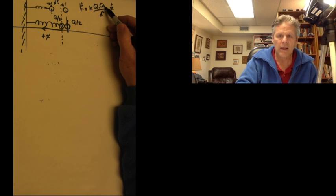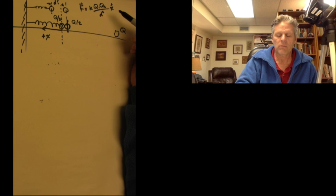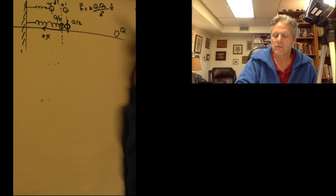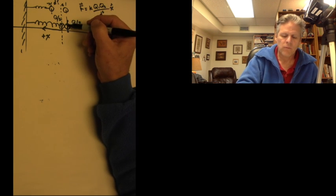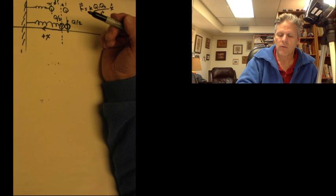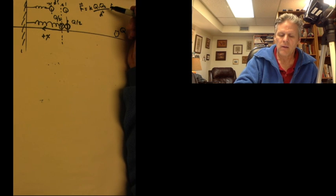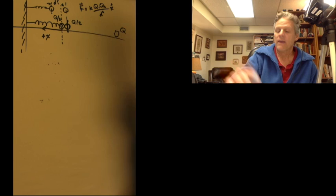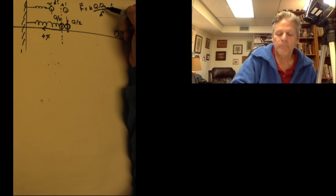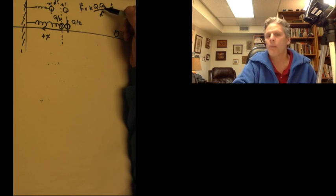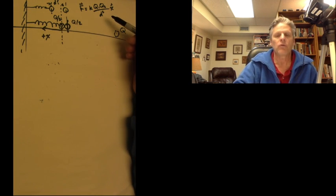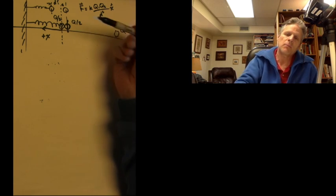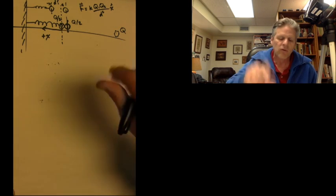Therefore, if Q1 and Q2 are negative, wait, did I do that correctly? Let me think about this. I'm going from here to here. I'm exerting the force on that one. Everything's great. If Q1 is the opposite sign of Q2, the force would be in the minus X direction. If Q1 and Q2 are the same, the force will be in the plus X direction. So everything's great there.